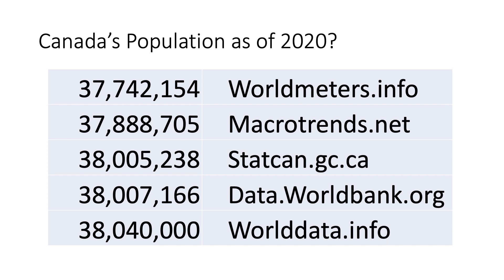Maybe the CIA's website is simply out of date and hasn't been updated for quite a while. Maybe we can find better agreement on Canada's population if we look backwards at, say, the year 2020. I looked at five different sources that I would generally consider to be reliable sources, and I got five different answers with a spread of nearly 1% difference between the largest and smallest reported figure.